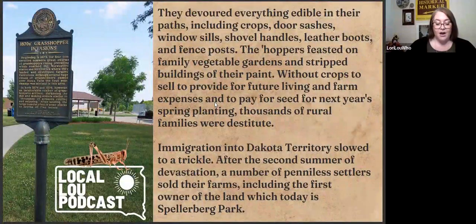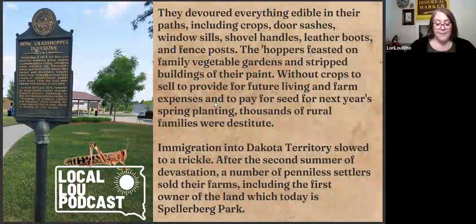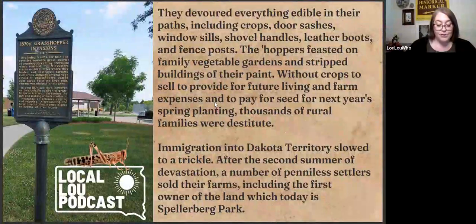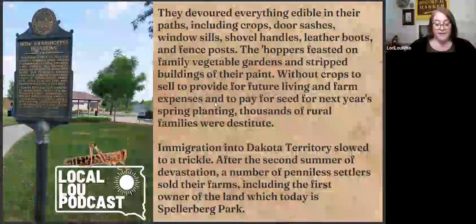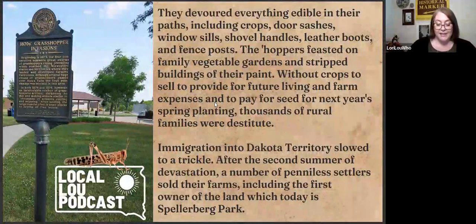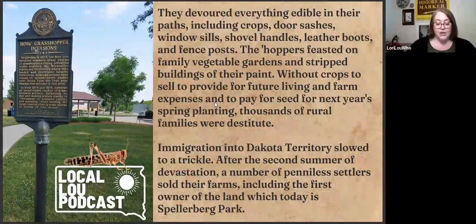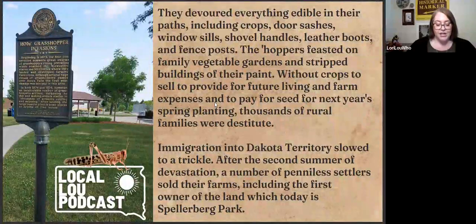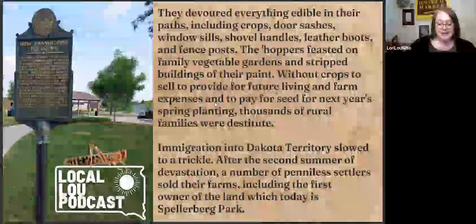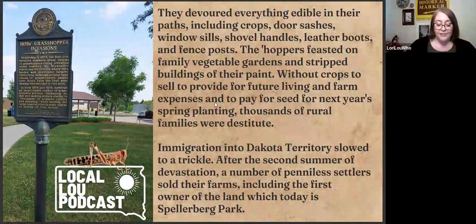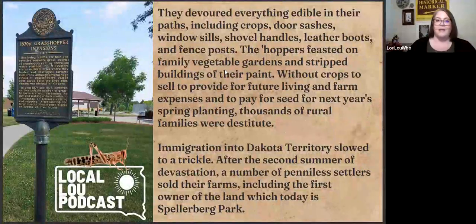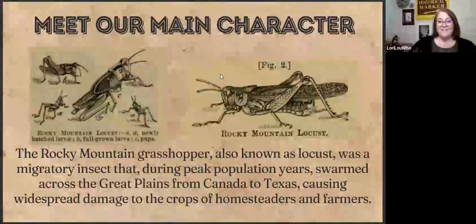The hoppers feasted on family vegetable gardens and stripped buildings of their paint. Without crops to sell to provide for future living and farm expenses and to pay for seed for next year's spring planting, thousands of rural families were destitute. Immigration into Dakota territories slowed to a trickle. After the second summer of devastation, a number of penniless settlers sold their farms, including the first owner of the land which is today Spellerberg Park.